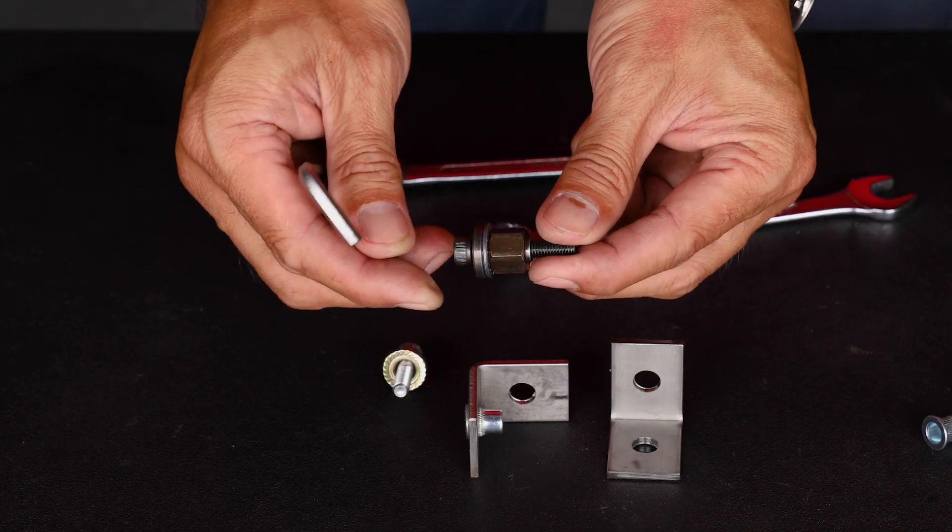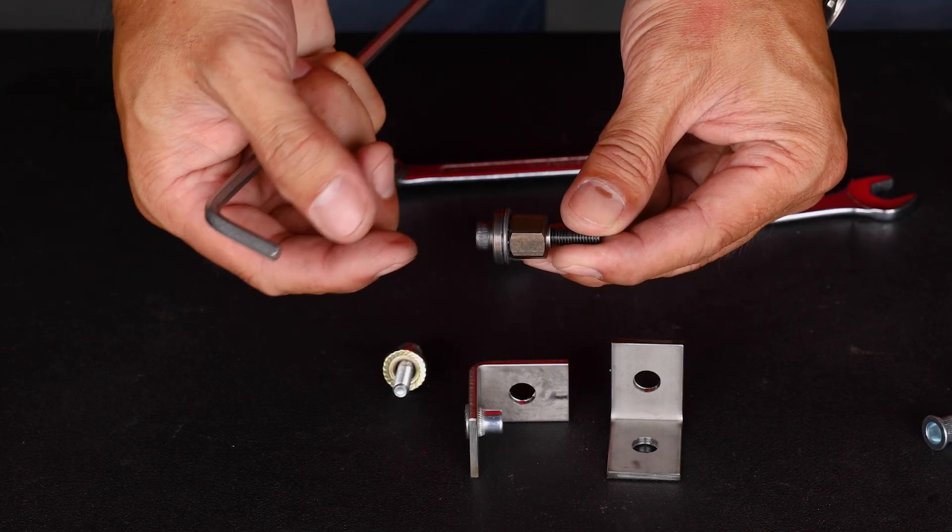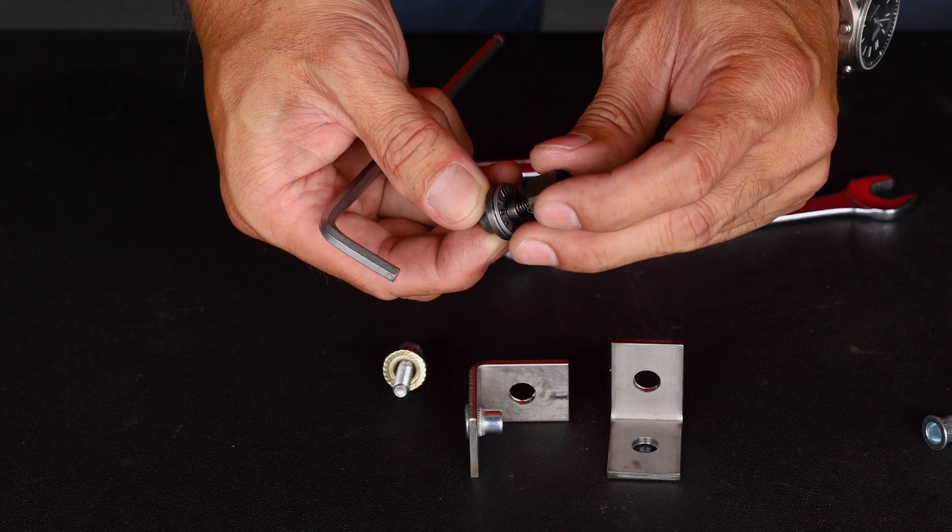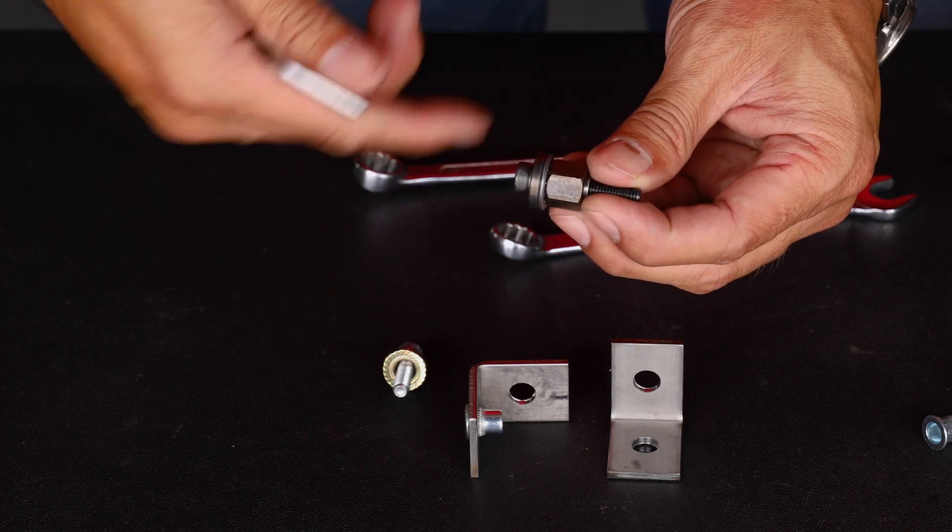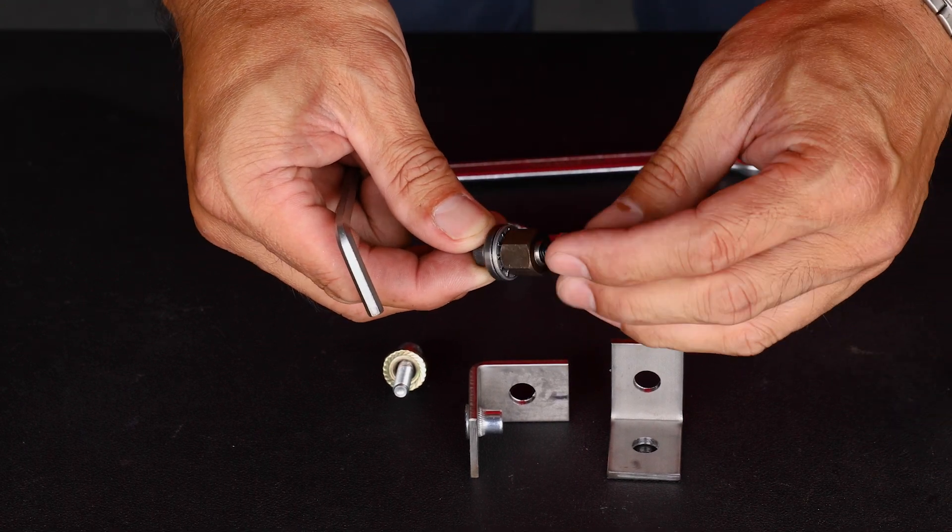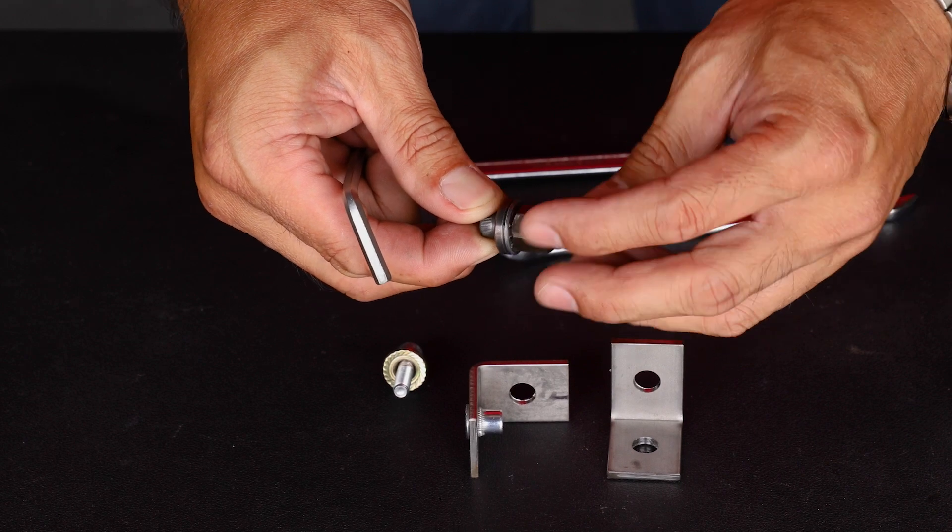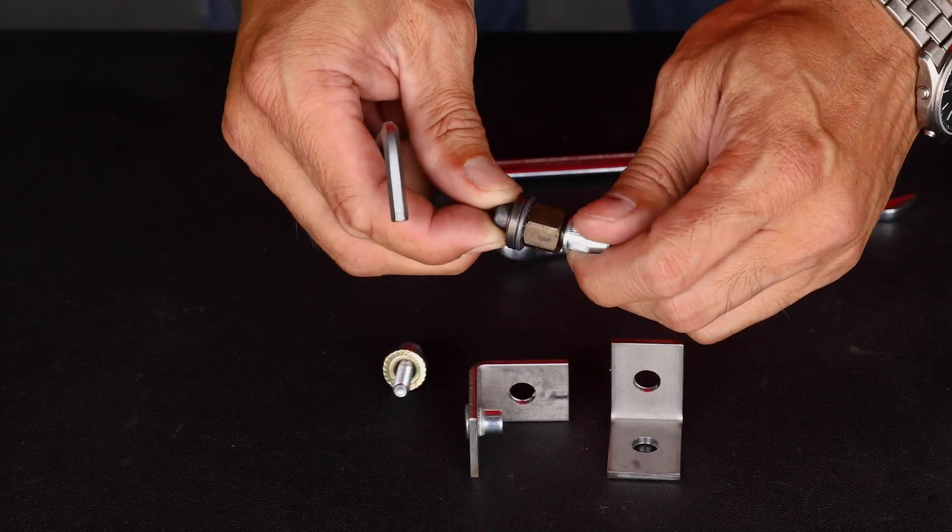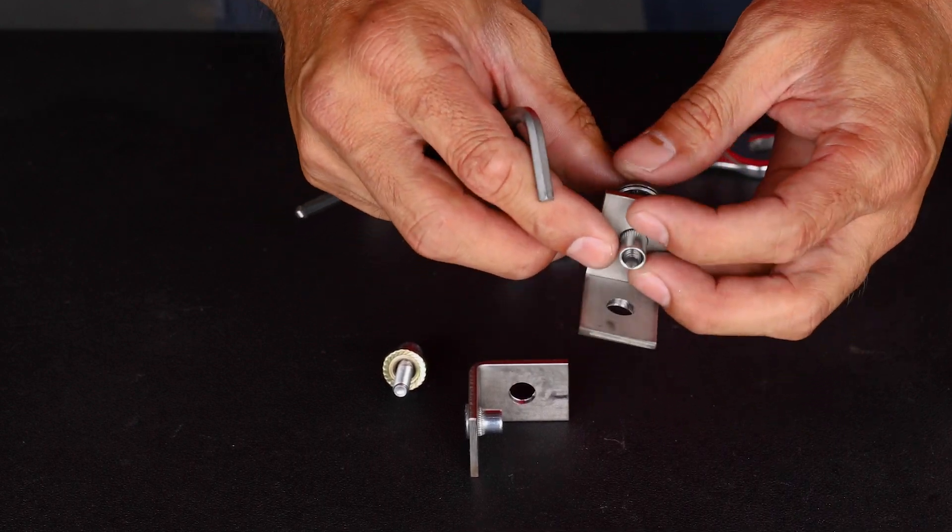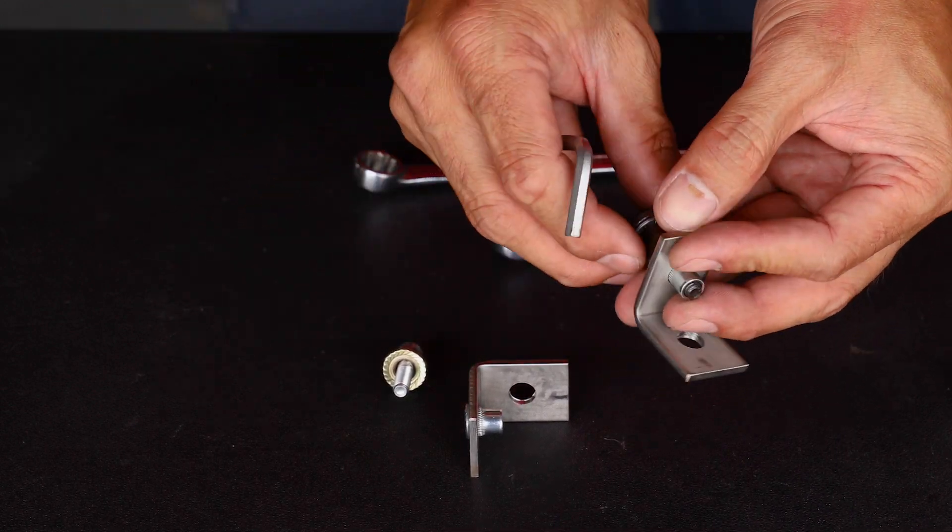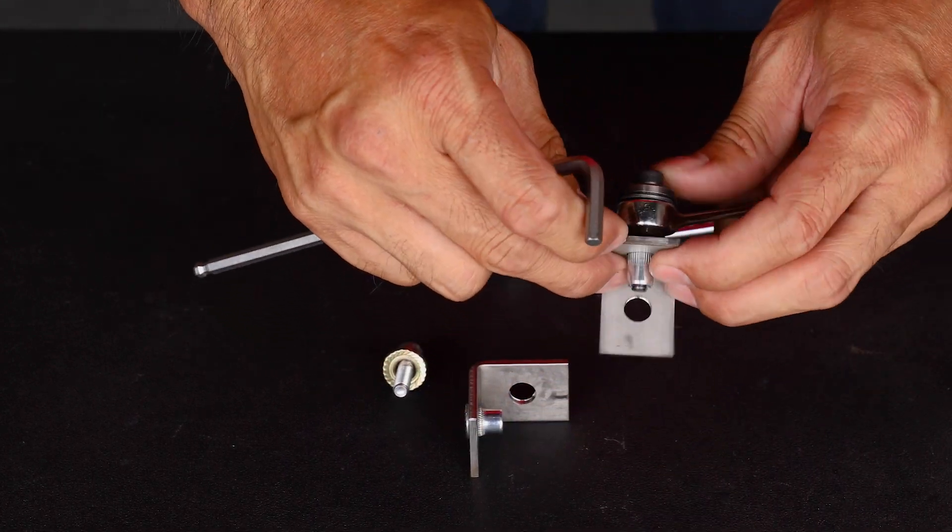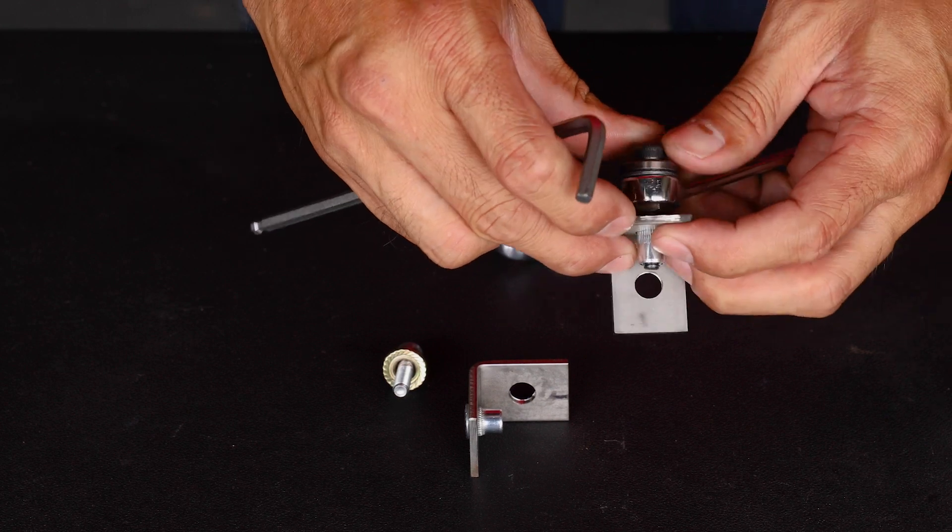We'll now set a nutsert with this tool which is a fancier version of what we've just done with the nut and bolt. This tool has a thrust bearing which makes it much less effort to actually pull and set the nutsert. So we'll do the same thing, we'll put the nutsert on the tool, wind it right up. With this one here it's designed to grip that nutsert really well so we don't need to preset it. Place it in the hole, actually I need to grab my ring spanner, place it in the hole